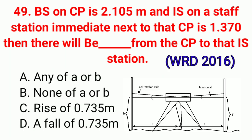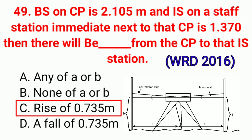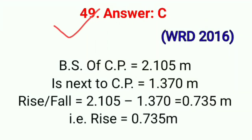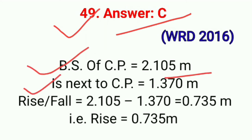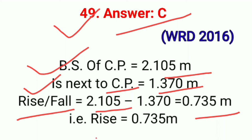Question No. 49. BS on CP is 2.105 m and IS on the staff station immediately next to that CP is 1.370 m. Then there will be a — correct option C: Rise of 0.735 m from the CP to that IS station. BS of CP = 2.105 m, IS next to CP = 1.370 m. Rise/Fall = 2.105 − 1.370 = 0.735 m rise. Correct option C.